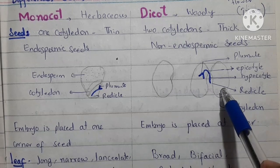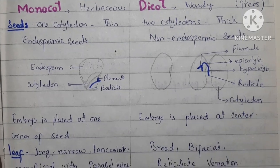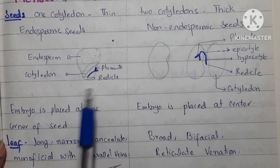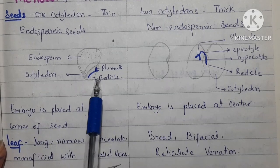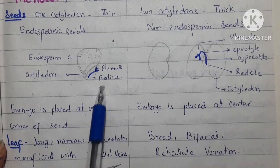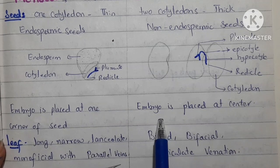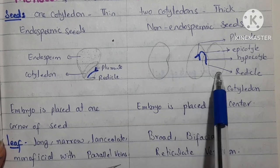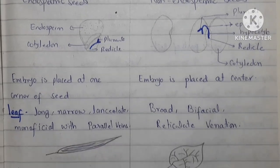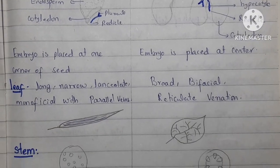These are the two cotyledons in the dicot embryo. In the case of the monocot embryo, it is on one side — on a corner of the seed. But in the case of the dicot embryo, it is surrounded by the cotyledons. This concludes our discussion of the seeds.